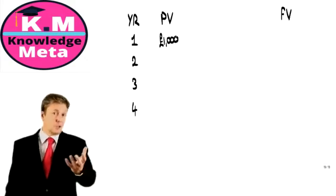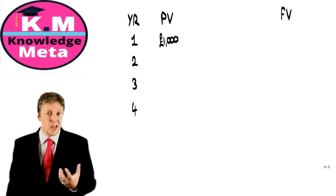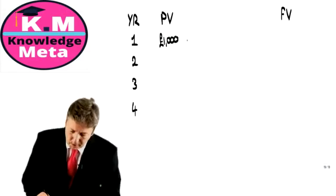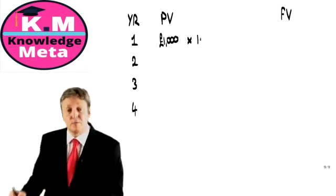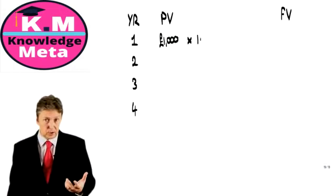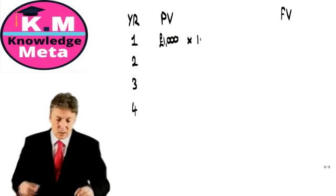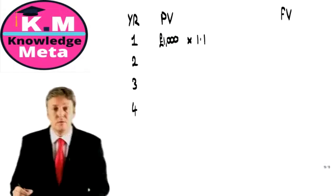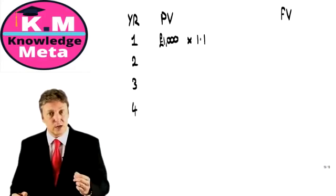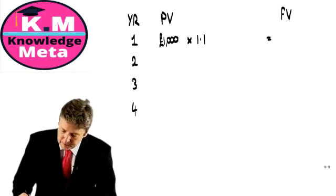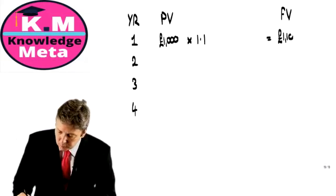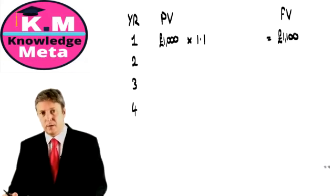The first year is obvious. We're earning a 10% return. So we can multiply by 1 to represent the principal, the original £1,000, plus 0.1 to represent the 10% interest. Therefore, at the end of the first year, we have £1,100.